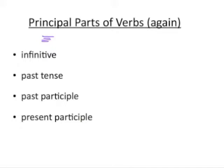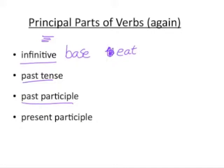Remember the infinitive, the past tense, the past participle — we've been talking about those since we started. The infinitive is the base of the verb, the uninflected, unconjugated, default form of the verb — the part you would look up in a good dictionary. My favorite example verb is 'eat.' The infinitive is indeed 'eat.' Sometimes we say the infinitive has 'to' in front of it, as in 'to eat,' but that's just a convention.